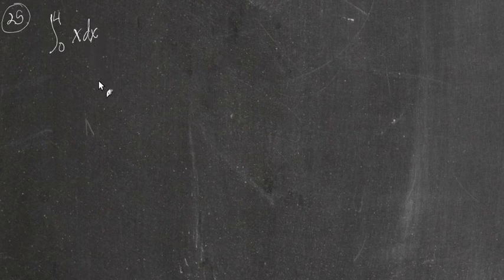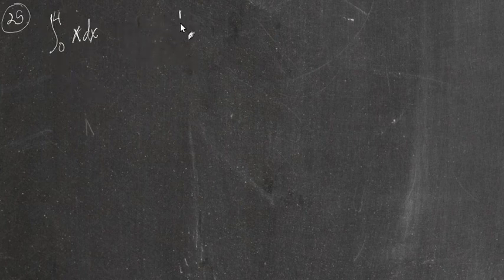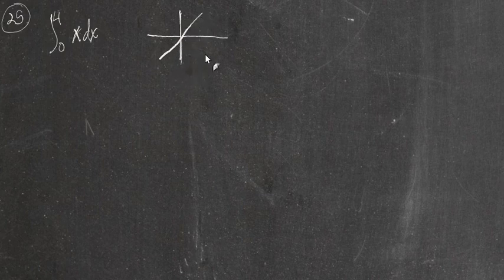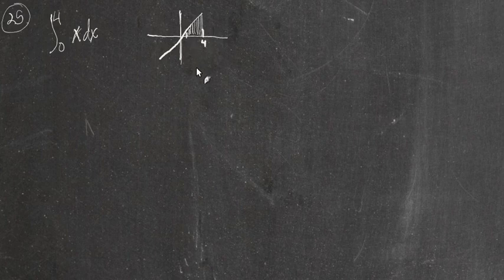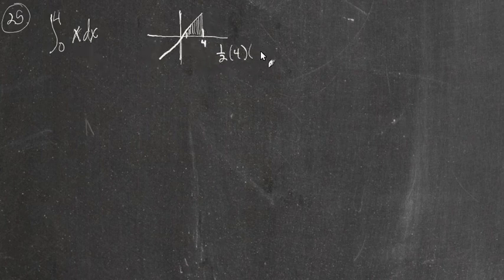Now number 25. We're going to sketch the region referenced by the definite integral and then use a geometric figure — a circle, triangle, rectangle, or whatever — to find the area under the curve, which equals the definite integral. This function is f(x) = x, a line with slope 1 through the origin, going from 0 to 4. Since it's all positive, the area equals the definite integral. The area of this triangle is 1/2 · base · height = 1/2 · 4 · 4 = 8.